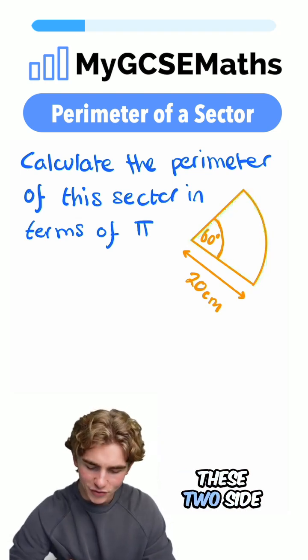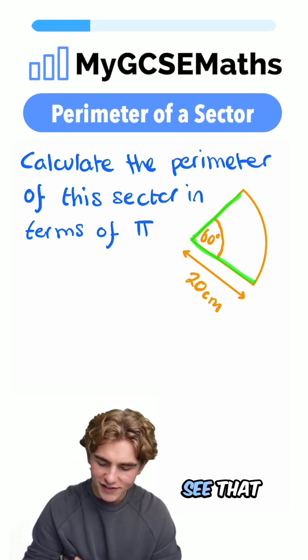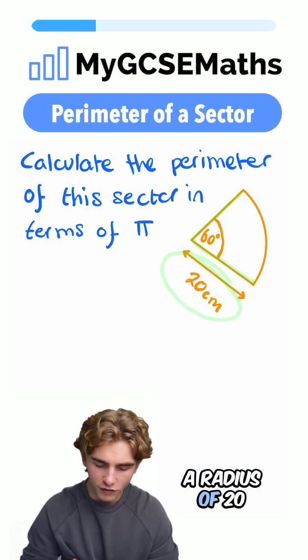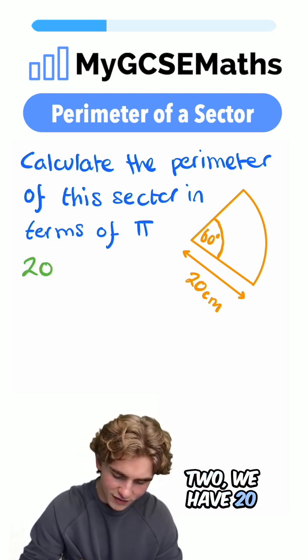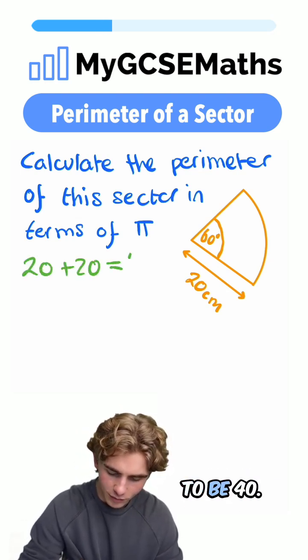First off, let's think about these two side lengths here. Well, we can see that the circle has a radius of 20 centimeters, so each of them is going to be 20. So for those two, we have 20 plus 20, which is just going to be 40.